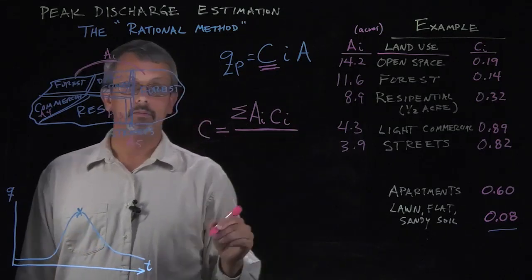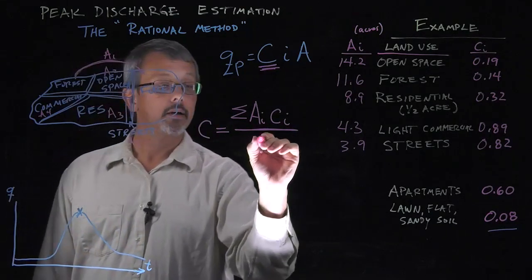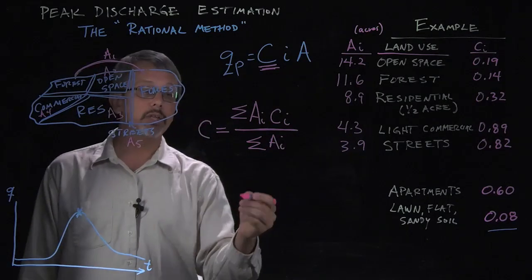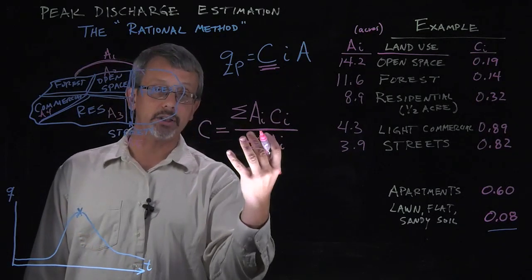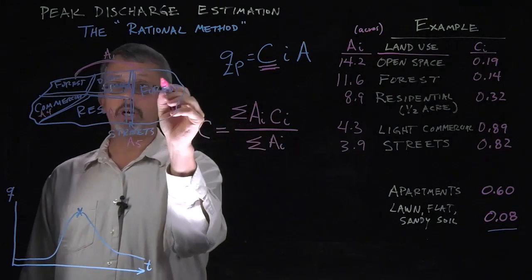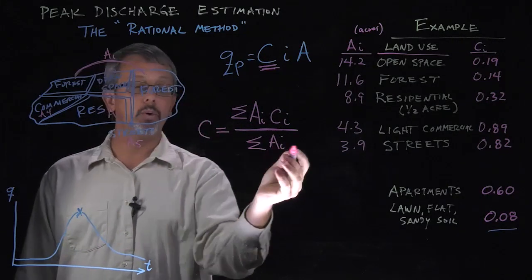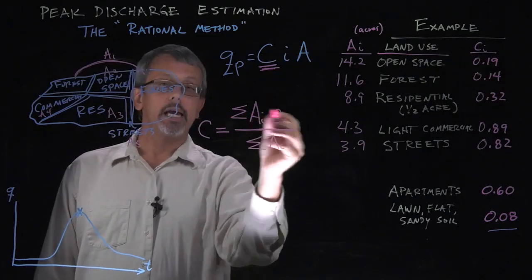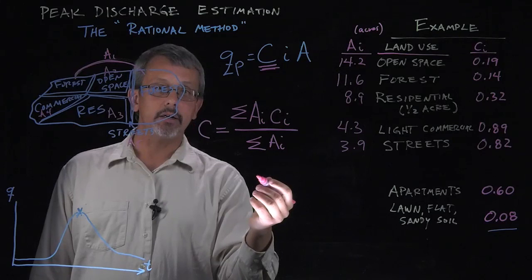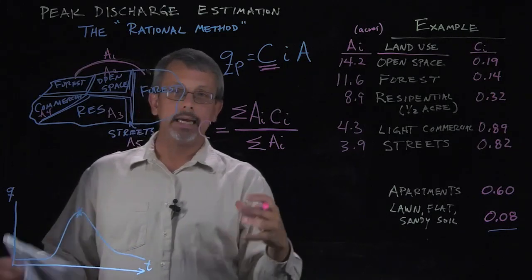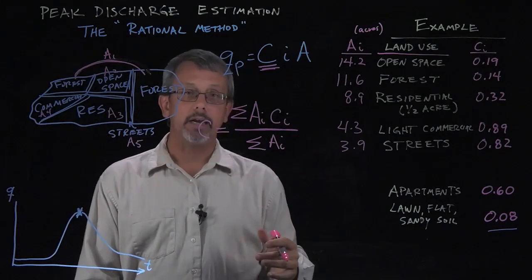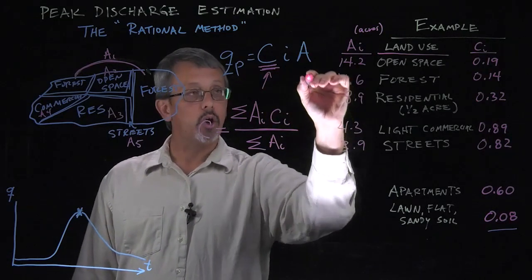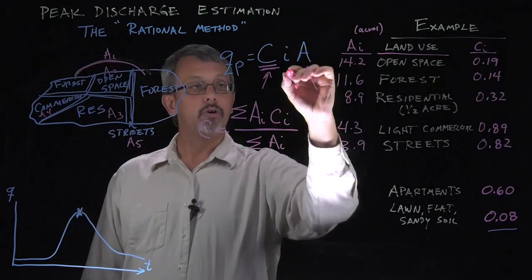After we've done that, we're going to normalize again by taking the sum of all the areas, dividing out by the total area. In other words, you can think of each of these pieces as being a fraction that it contributes. The forest contributes A1 over the total A as a fraction of the coefficient. If I do this calculation here, then I will get a weighted average coefficient. That coefficient is the one that we can then plug in here and use the overall area and the overall rainfall intensity to estimate the peak discharge.